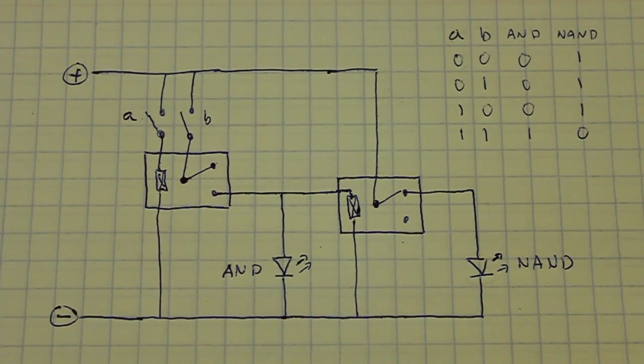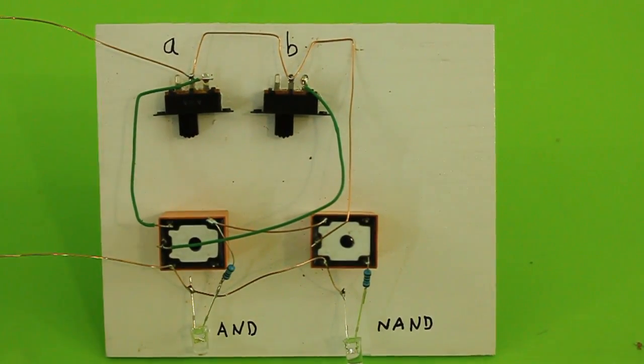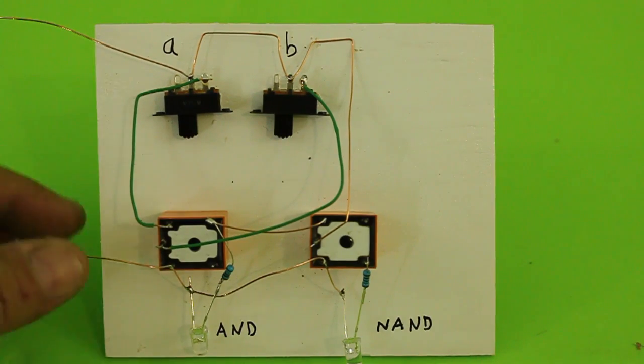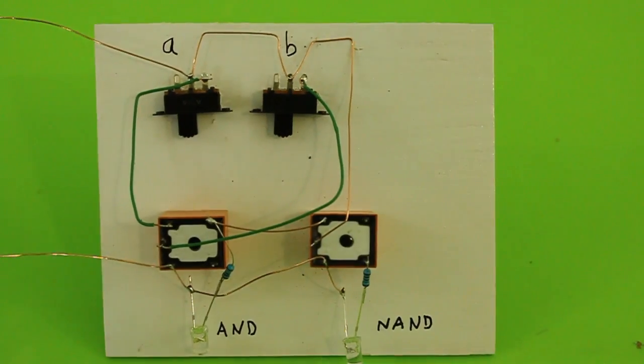So, let's now see it working on the real circuit. Ok. Here it is. We have positive and negative of the power supply. The 2 switches. 2 relays. The AND LED. And the NAND LED. With its resistors. Because we are using 5 volts. We use this voltage because it's the working voltage of the relays.